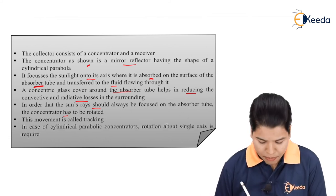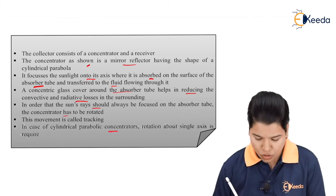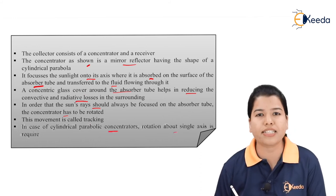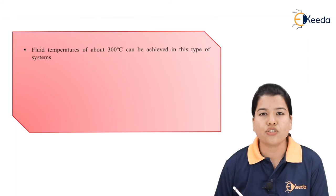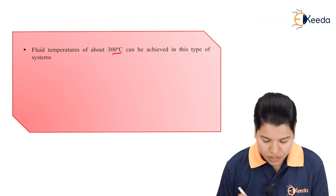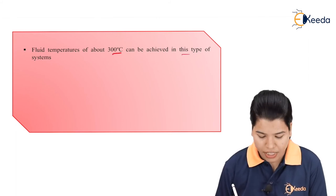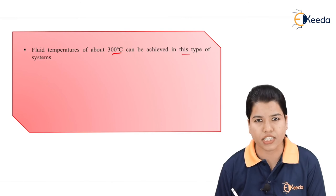In case of cylindrical parabolic concentrator, the rotation about the single axis is required. The fluid temperatures of about 300 degree centigrade can be achieved by this type of system.